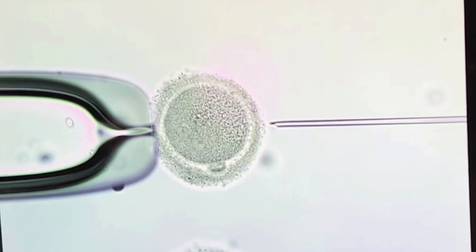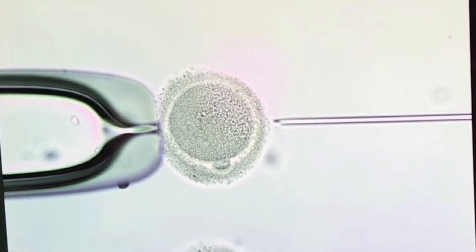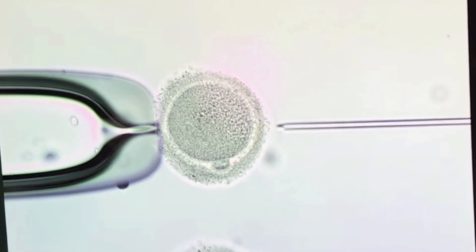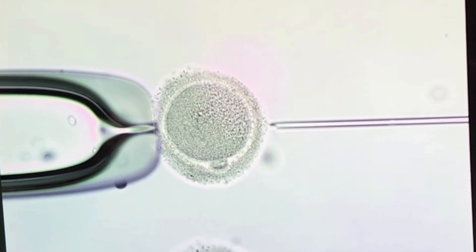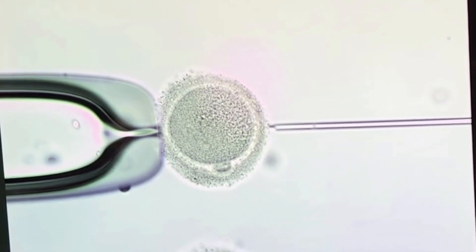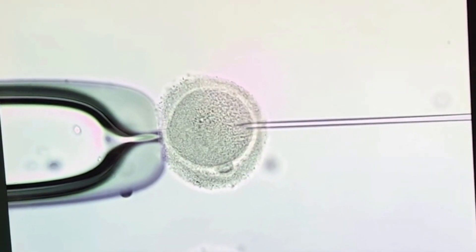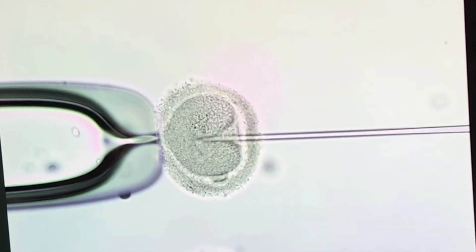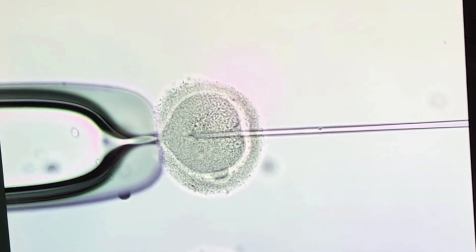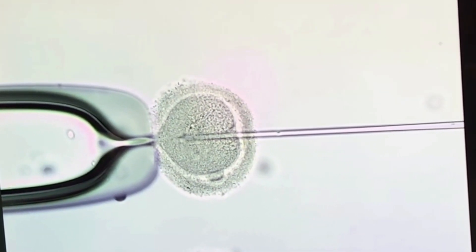Using the microscope, the egg is held on the left side with the holding pipette so that it can be positioned just right. The injection pipette on the right holds the sperm that was selected and you can see the sperm come to the tip of the pipette just before injecting into the egg and very carefully placing the sperm in the cytoplasm of the egg.